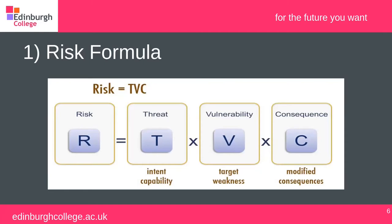We can calculate the threat — the intent and capability — the vulnerability or weakness, and the consequences, assigning each a metric such as one to ten. If threat is 1, vulnerability is 1, consequence is 1, risk equals 1. If all three are 10, risk equals 1,000 — the highest possible risk on that scale.